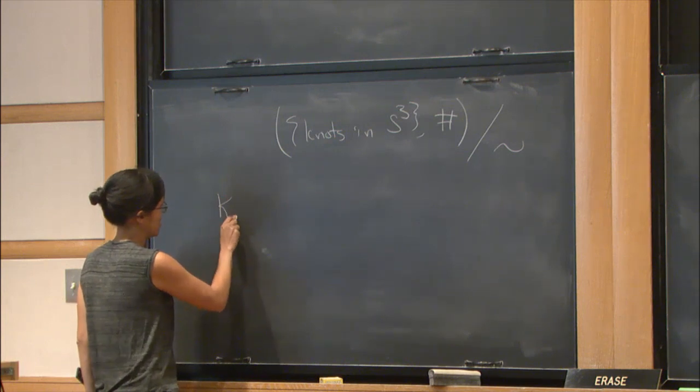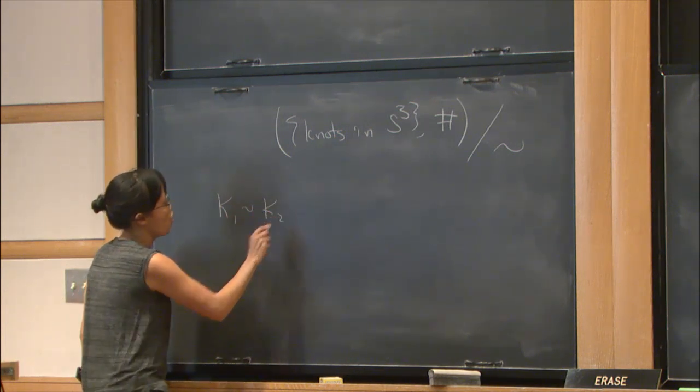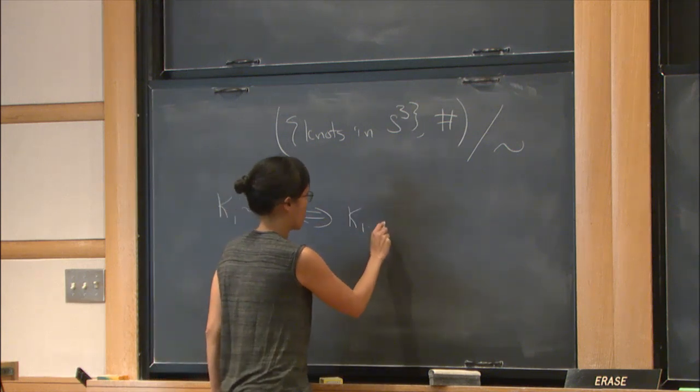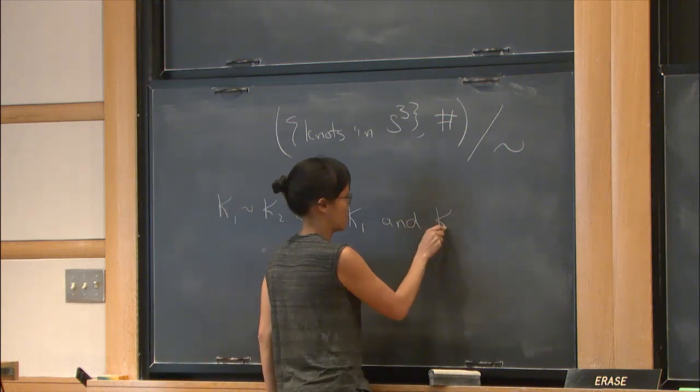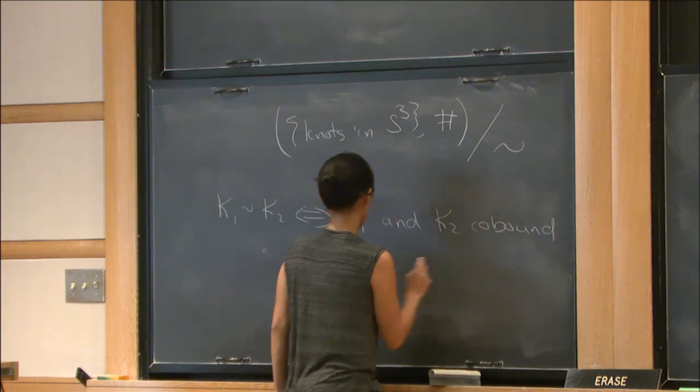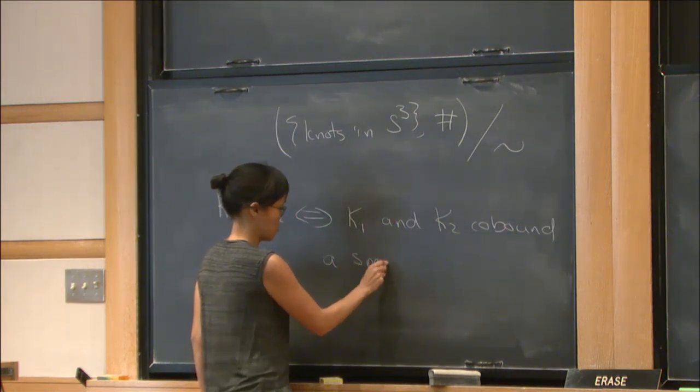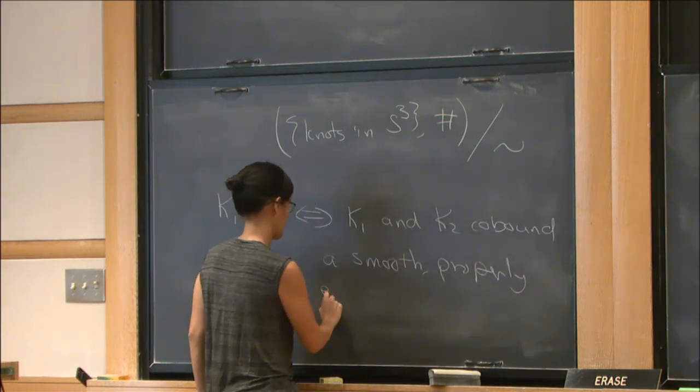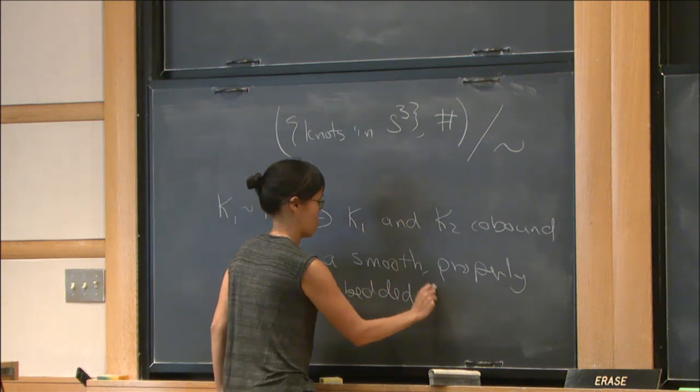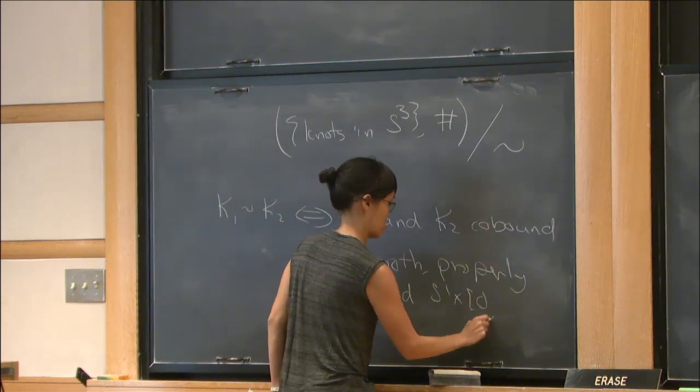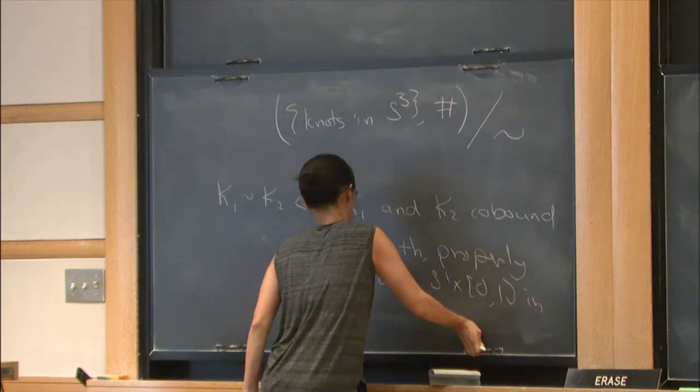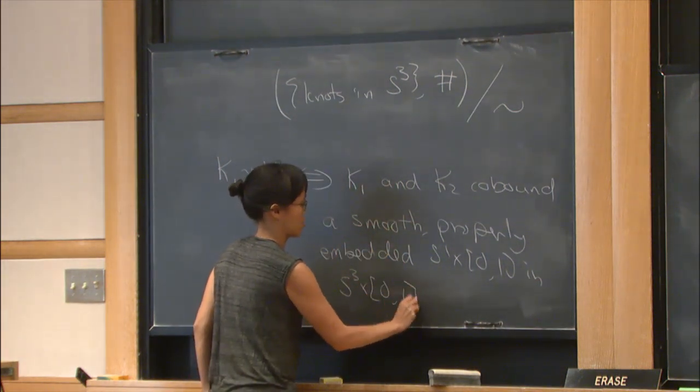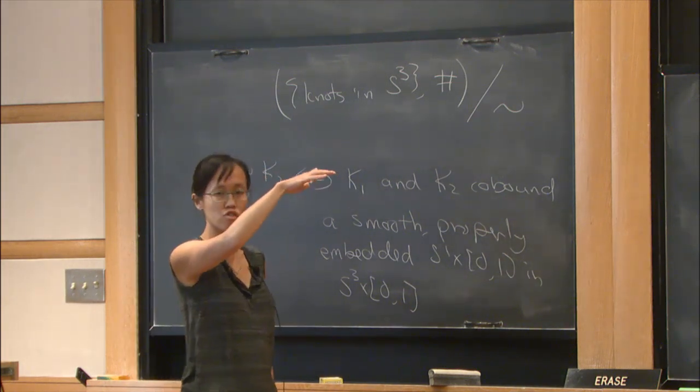The equivalence relation is that two knots K₁ and K₂ are concordant if and only if K₁ and K₂ co-bound a smooth, properly embedded cylinder in S³ × I. So you think of K₁ as sitting in S³ × 0 and K₂ sitting in S³ × 1, and you have the cylinder between them.